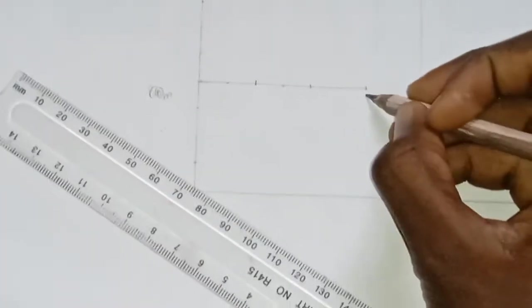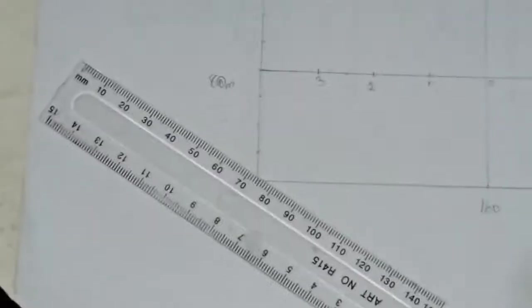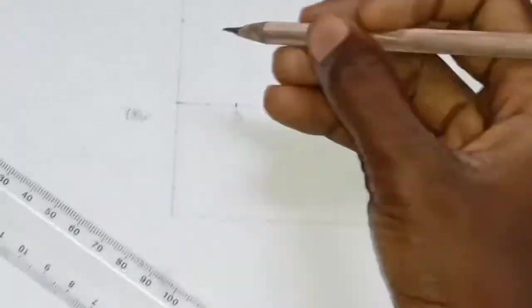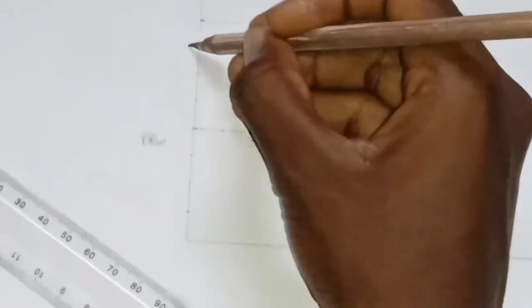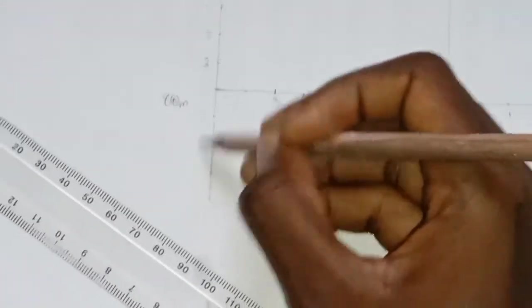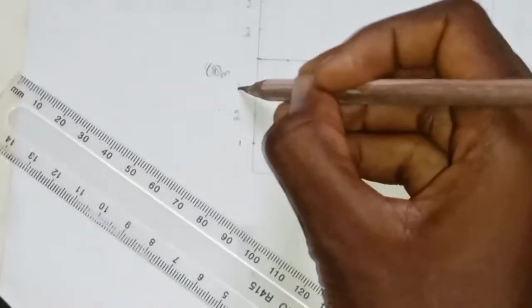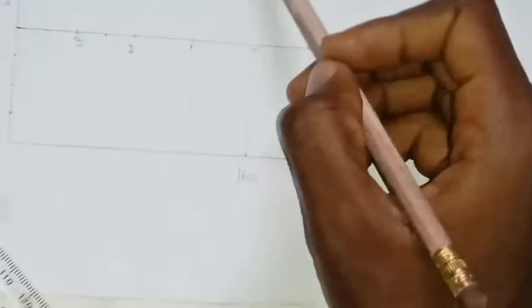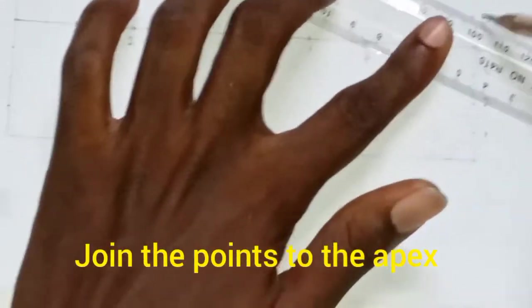Now after doing this, we can number them: one, two, three. Same thing here: one, two, three. Also number here: one, two, three. Call here: one, two, three. Do the same thing this way: one, two, three and one, two, three. Now the next thing for us to do is to join this point to all these points. What do I mean? Join them all to this midpoint.